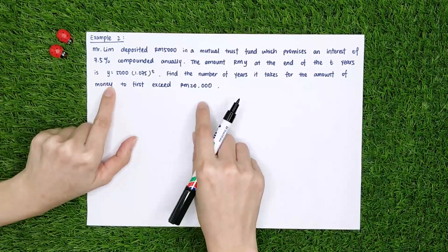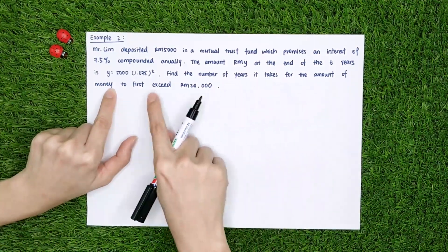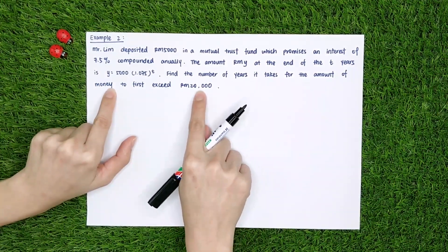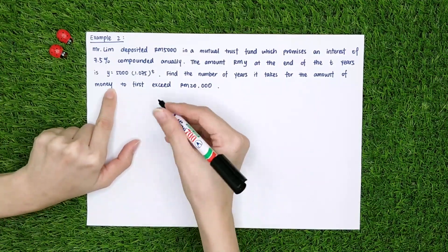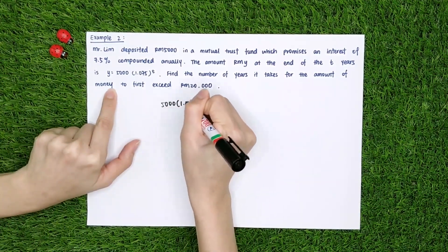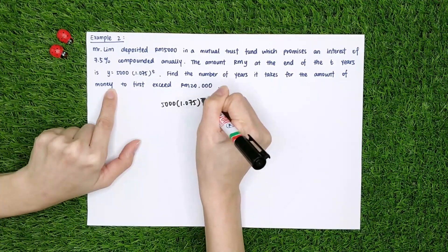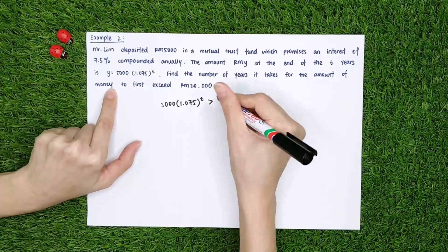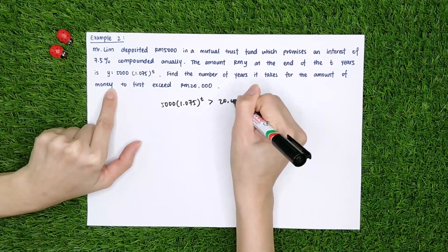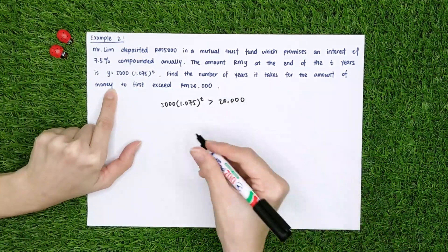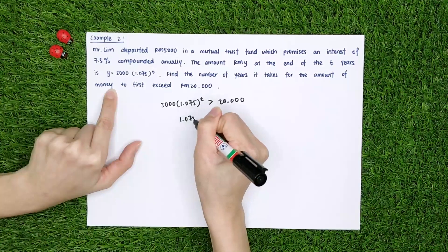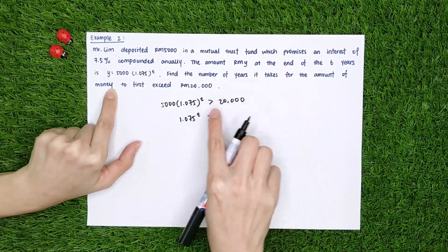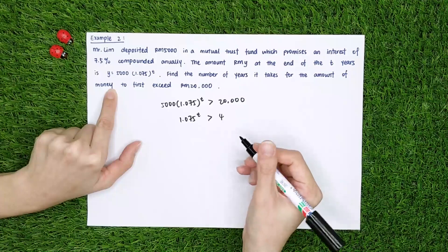Okay, but the question asks, how many years it takes for the amount to first exceed $20,000? Okay, so I will write like this. 5,000 times 1.075 to the power of t. I need to know what is the t when this one can get more than $20,000. So 1.075 to the power of t, 20,000 divided by 5,000, you will get 4.